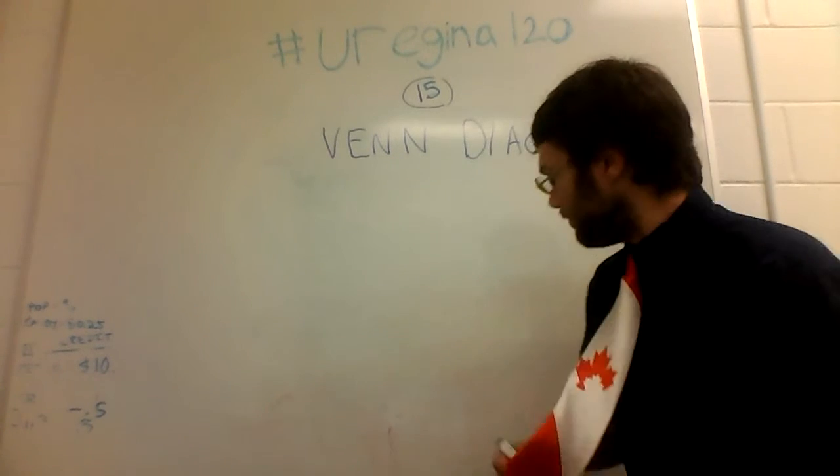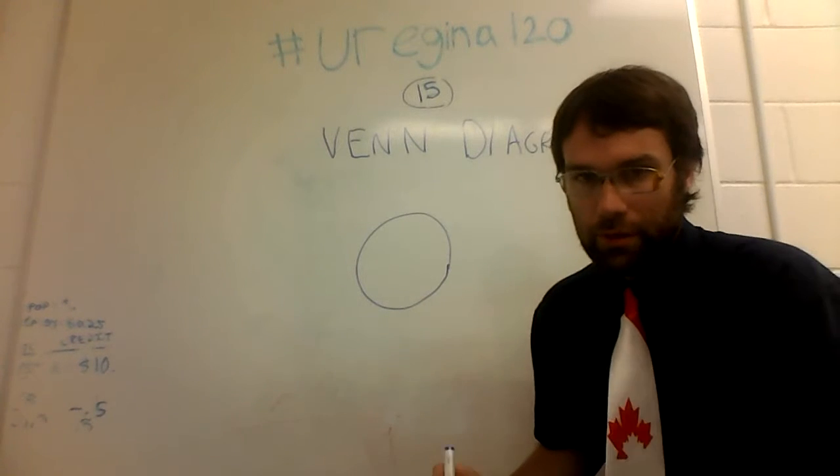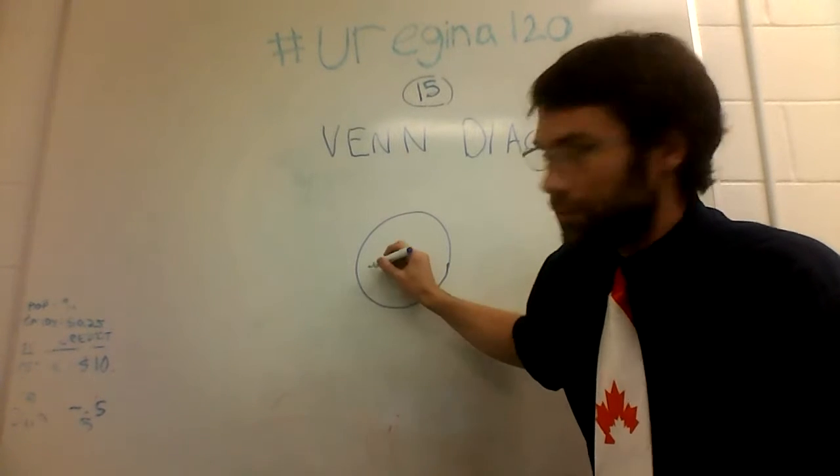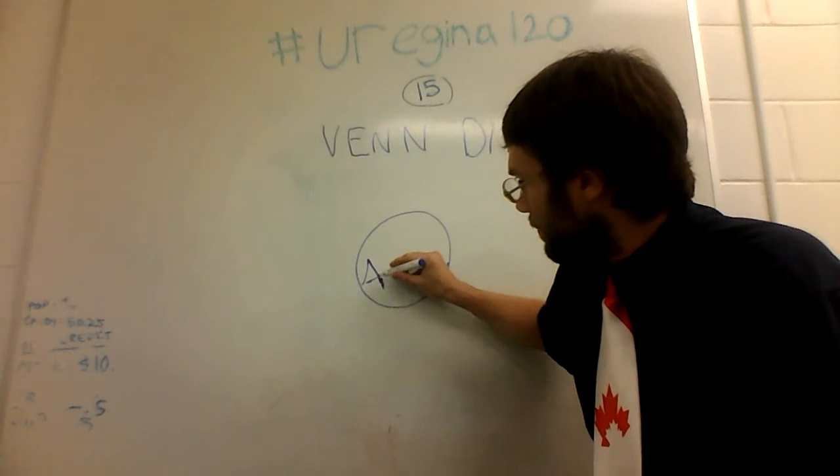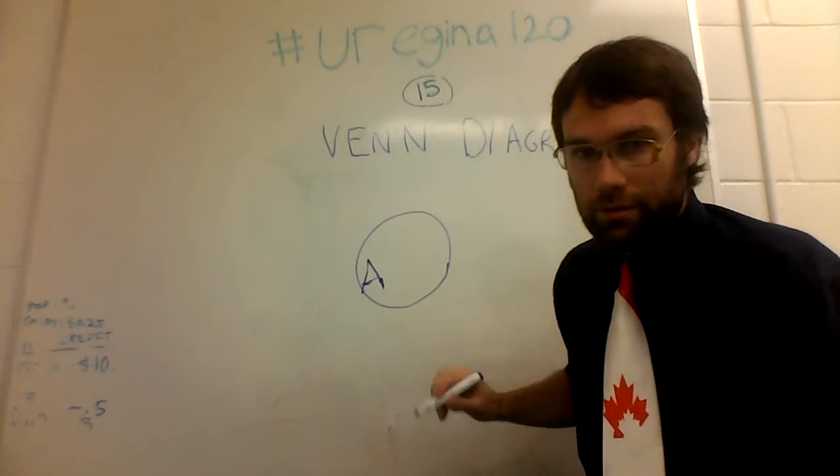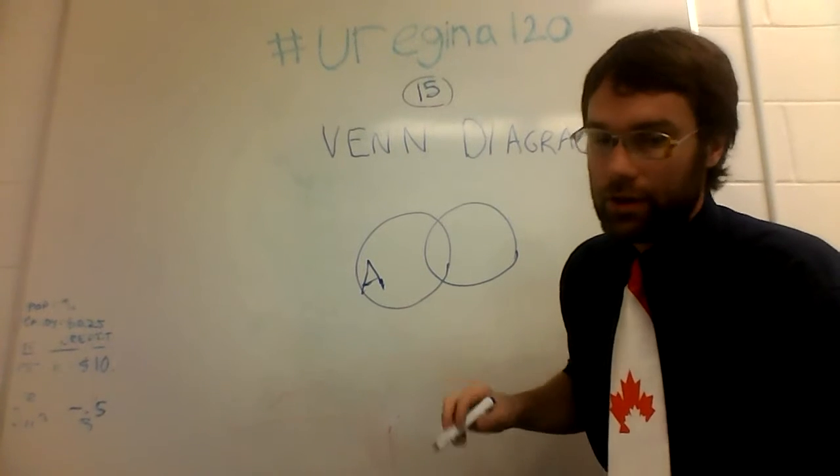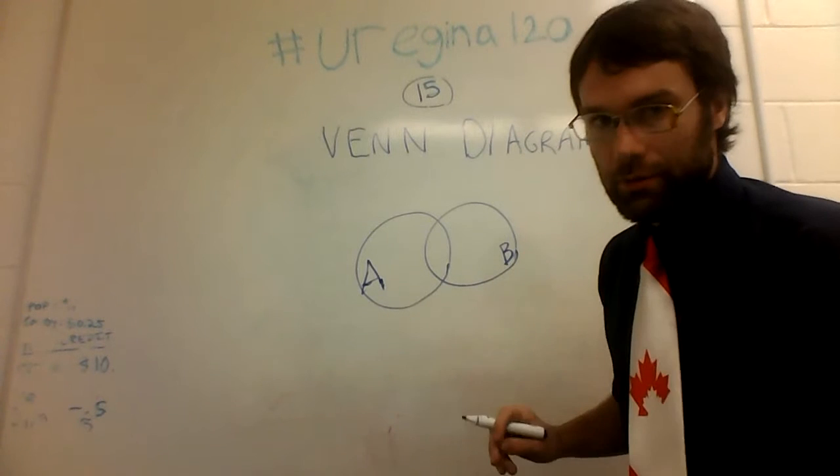So how it's going to work is we're going to draw a picture of a circle. And this circle is going to represent some property, or some event, or some something. We're going to call it A. And then we're going to draw another circle, which may or may not come into contact with this first circle. And we're going to call this B.